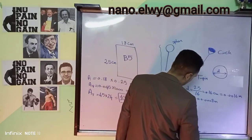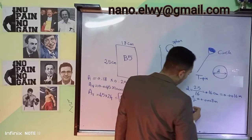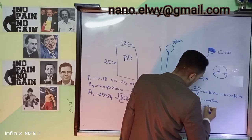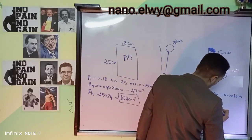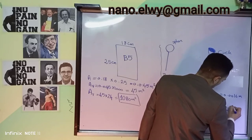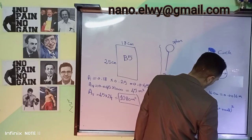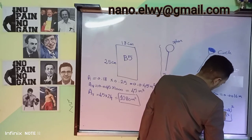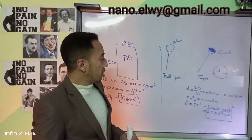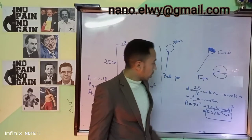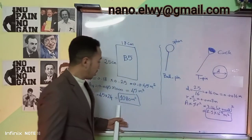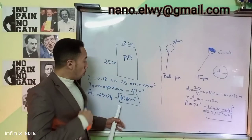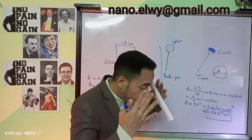So the area of the pin head, using the formula π×r², equals 3.14 times (0.0008)², which equals approximately 2.5×10⁻⁶ square meters. It is very clear that this area of the head of the pin is far too small to accommodate the entire 24 volumes of the Encyclopedia Britannica, which requires over 1,000 square meters.